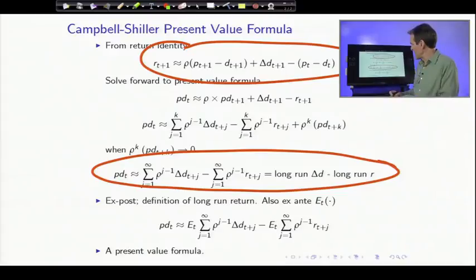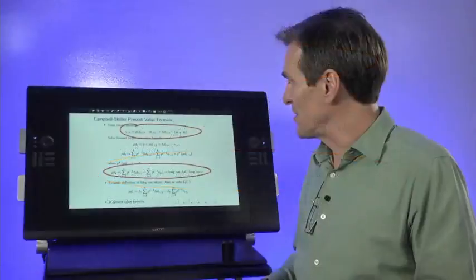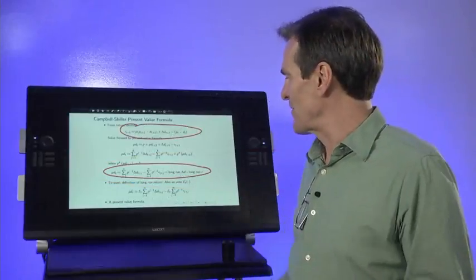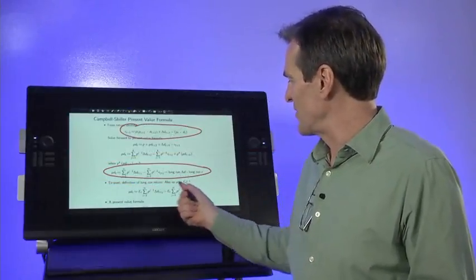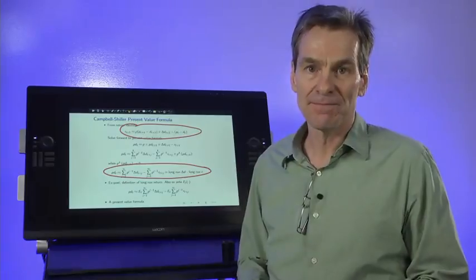But you see now, of course, that expectations far in the future can raise prices today. So it's a beautiful linearized present value formula, which we'll be able to use to put together observations about prices, long run dividend growth, and long run returns.